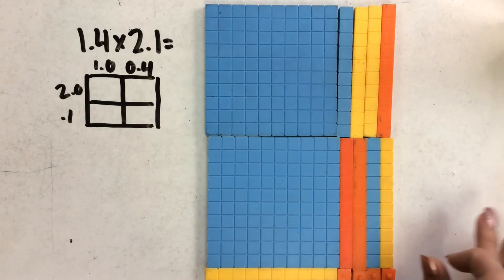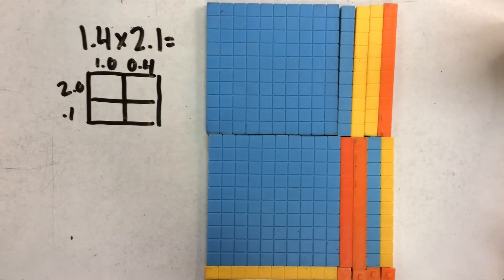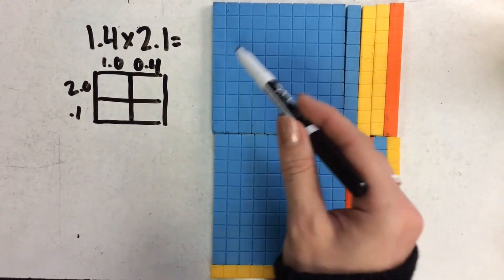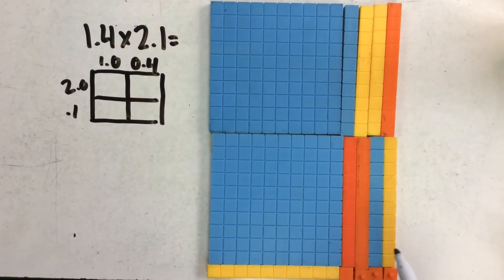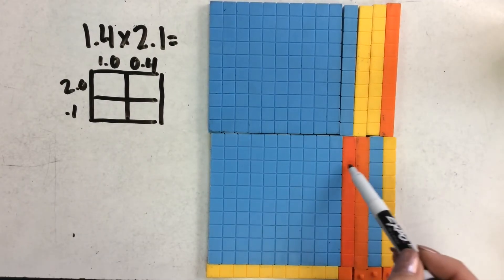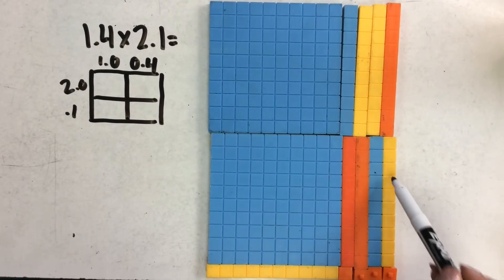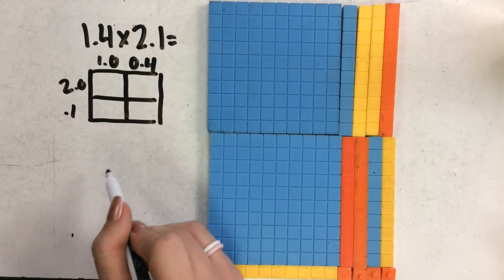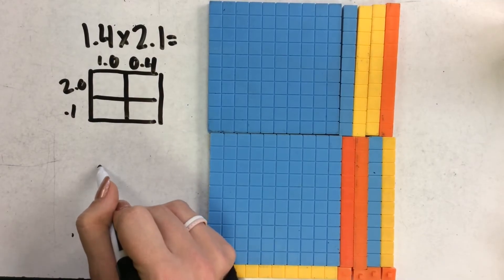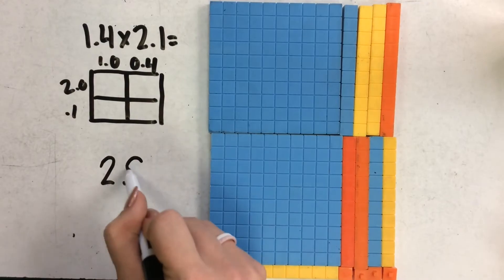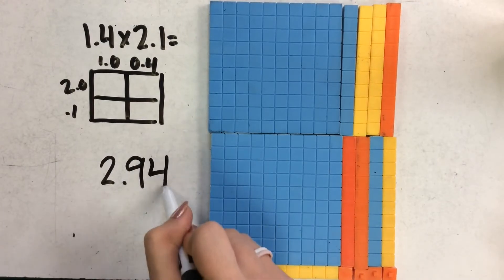This is a way to represent this area model — one and four tenths times two and one tenth. We can see that it gives us one, two, three, four, five, six, seven, eight, nine tenths; one, two, three, four hundredths; and two wholes.